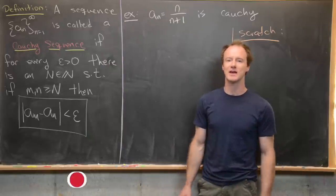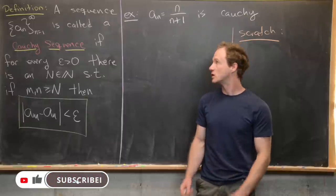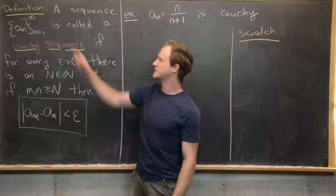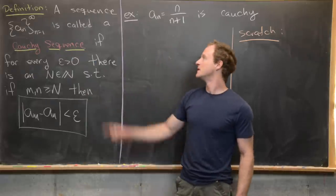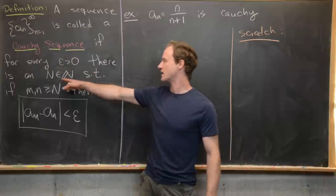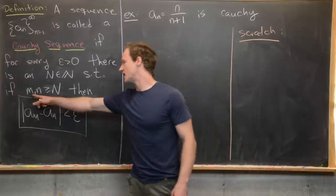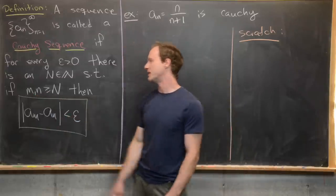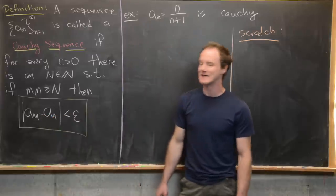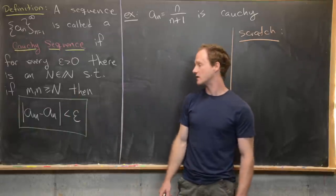Here we're going to look at the notion of something called a Cauchy sequence and prove some standard results involving Cauchy sequences. So let's look at the definition. A sequence of real numbers a_n is called a Cauchy sequence if for every epsilon greater than zero there is a natural number N such that if m and n are greater than or equal to N, then |a_m - a_n| < epsilon.